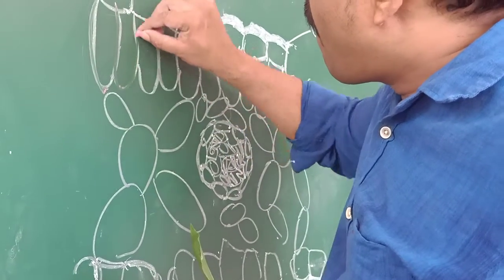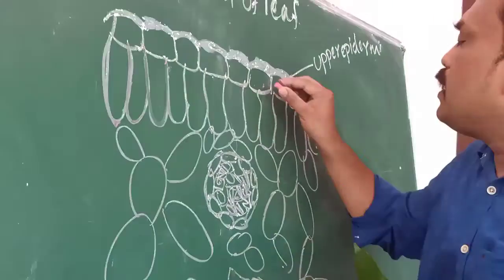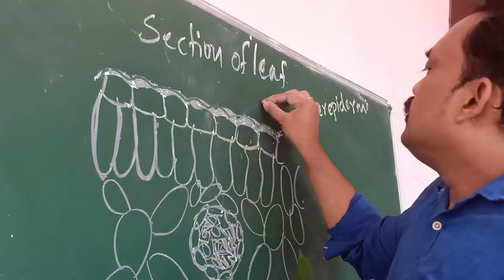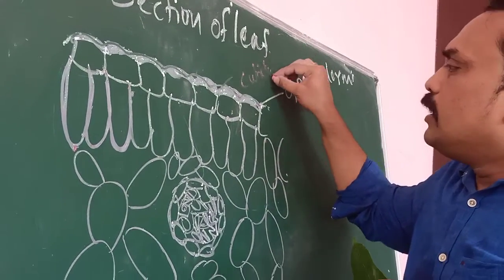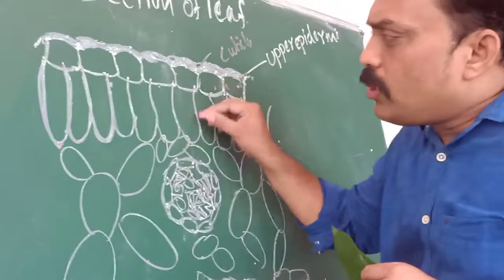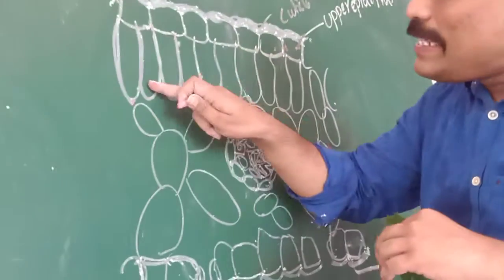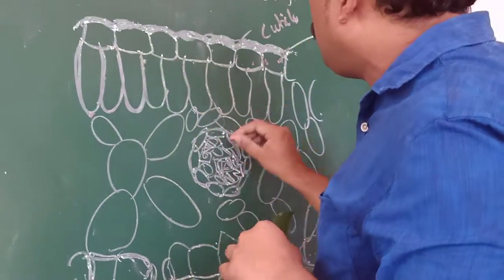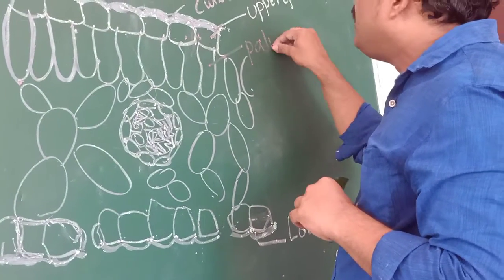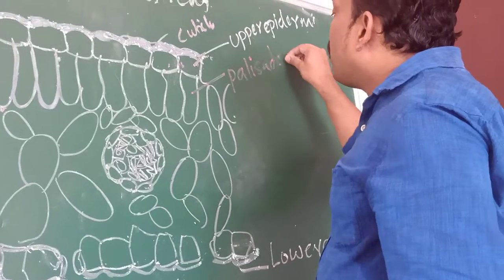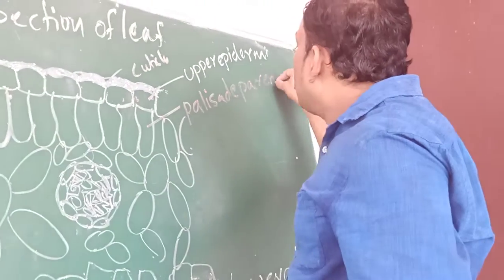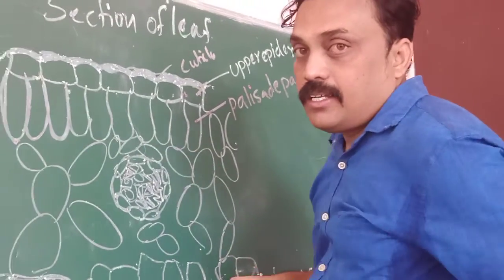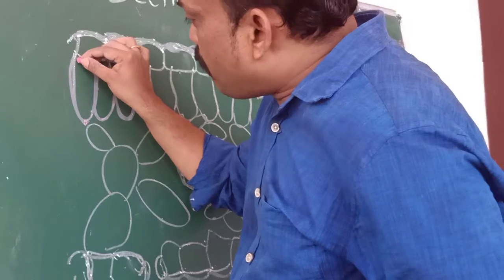The upper epidermis is covered with what? Cuticle — we call this the cuticle. Below the upper epidermis, cylindric-shaped cells are observed. These cylindric-shaped cells we can call palisade parenchyma. We already learned about parenchyma in 9th class. This is palisade parenchyma.